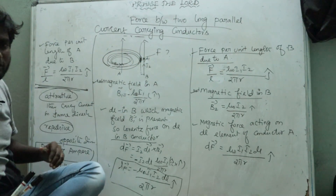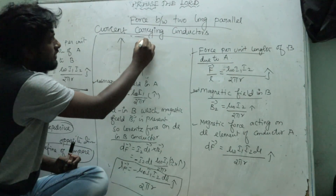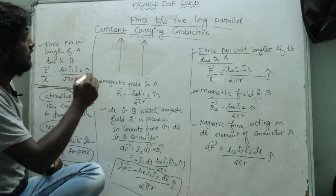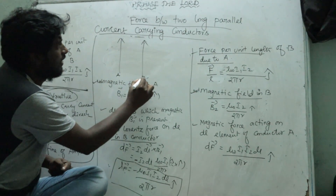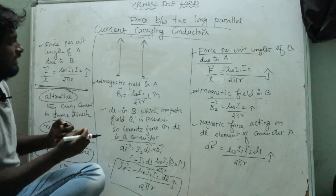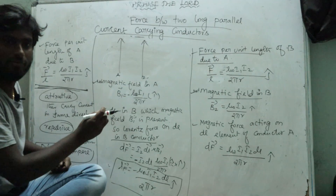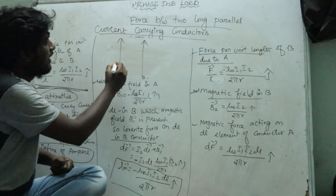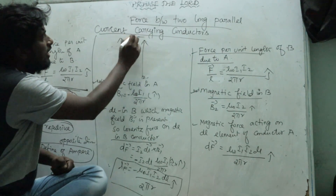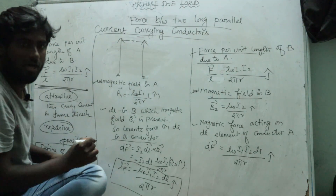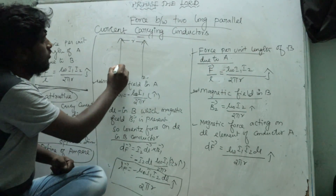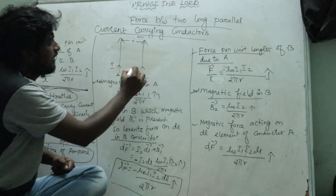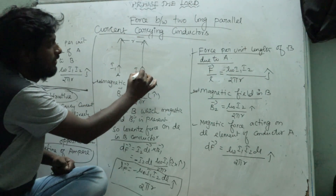Let us consider two long parallel current-carrying conductors A and B. They are placed with a distance R between them. I1 is the current flowing through conductor A, and I2 is the current flowing through conductor B.